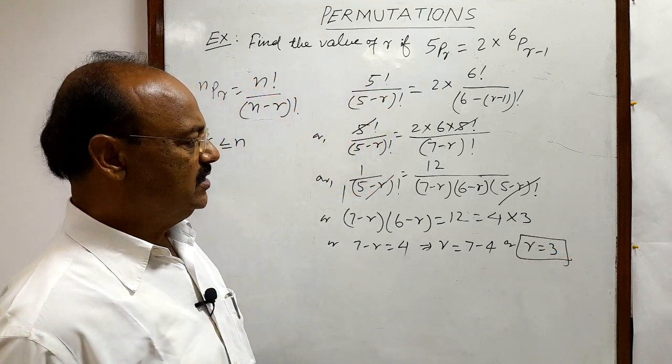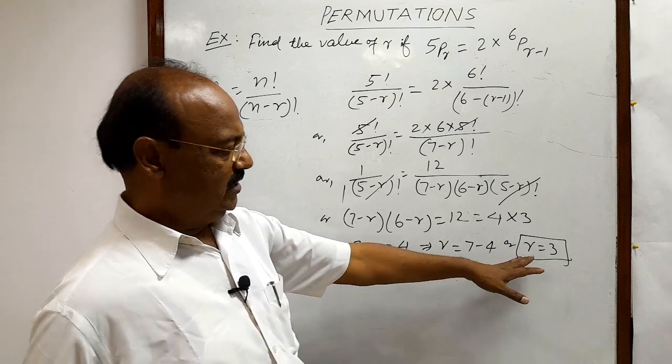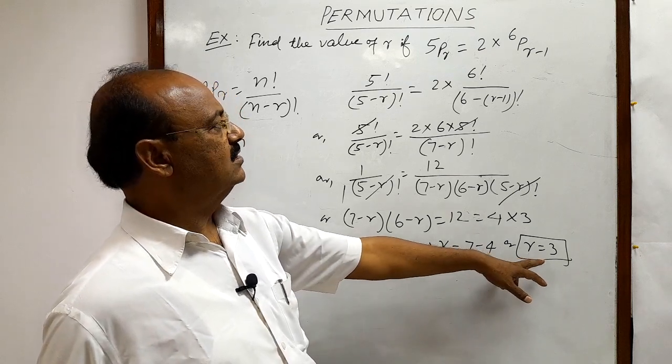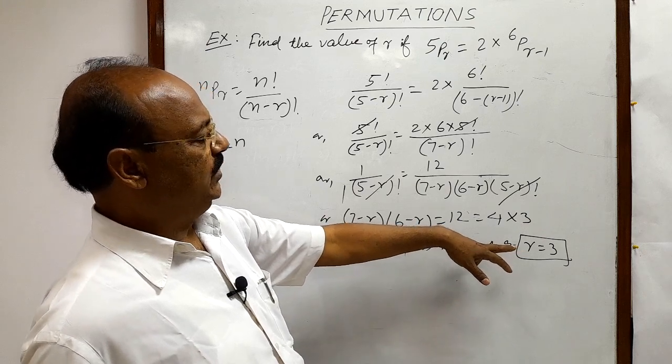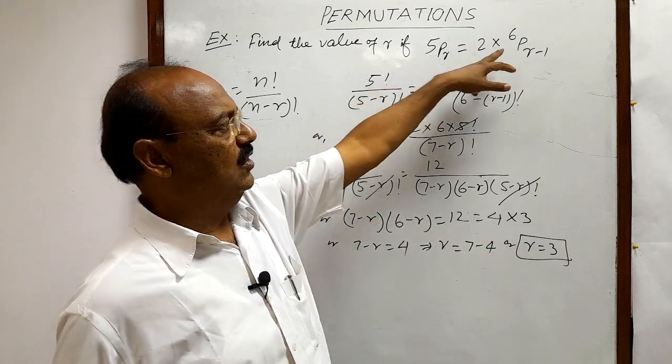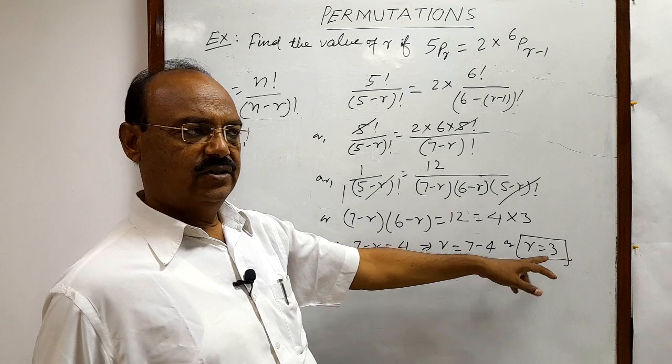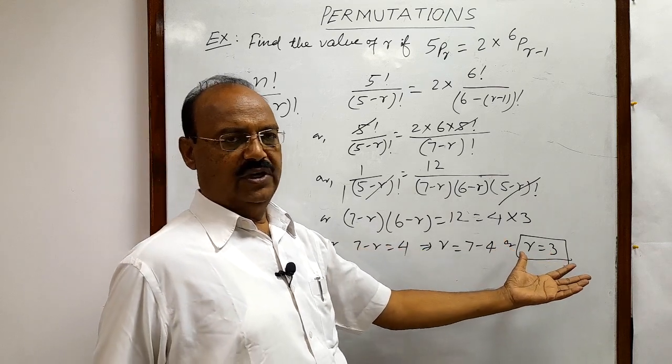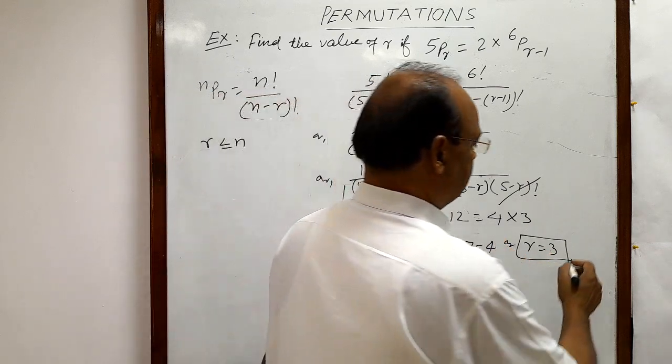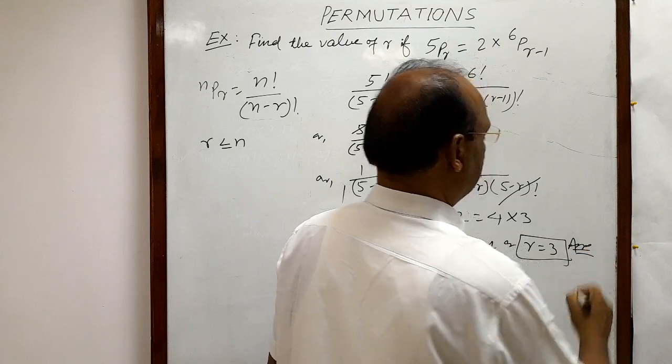So this is the answer, and this is important to note that value of r is 3, which was not supposed to be greater than 5 or 6. So r is 3. So the answer is okay. We are okay with this answer. So r is equal to 3. This is the value of r. This is the answer.